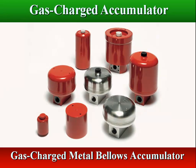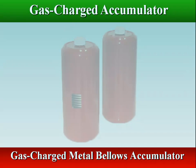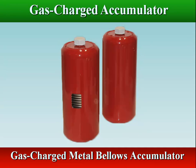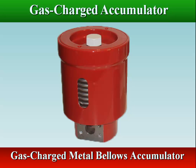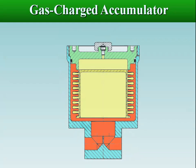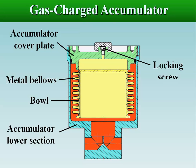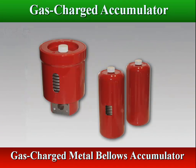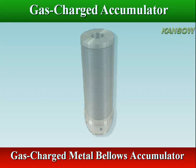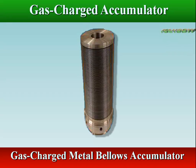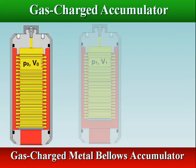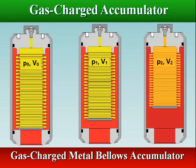The metal bellows accumulator is similar to bladder type, except the elastic element is replaced by a hermetically sealed welded metal bellows. A metal bellows accumulator consists of a pressure vessel with a metal bellows assembly separating fluid and nitrogen. Metal bellows are made up of Teflon and alloys which offer better dampening quality. Metal bellows are used where a fast response time is not critical. This type of accumulator is quite reliable for hydraulic circuits.